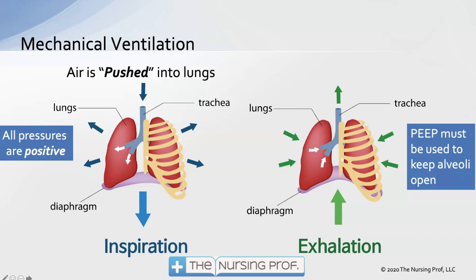With mechanical ventilation, air is pushed into the lungs instead of pulled, making all pressures in the chest positive — like blowing up a balloon. We must be careful: if we push too much air in, we'll pop the lung, just like over-inflating a balloon. Expiration is again passive, with positive pressure pushing the air back out. Because the diaphragm and chest wall aren't working for us, we must use PEEP — positive end expiratory pressure — to keep the alveoli open, otherwise they'll collapse.